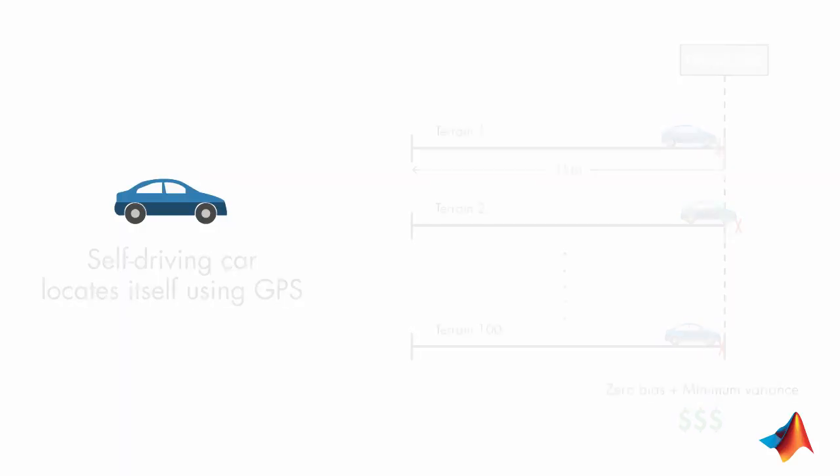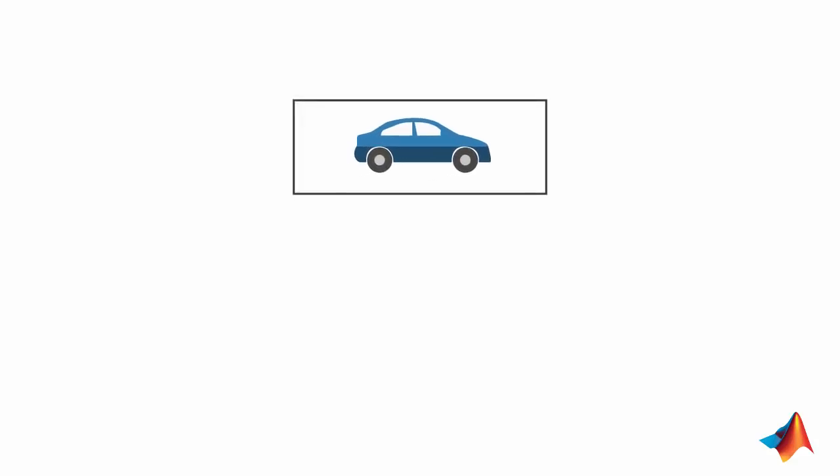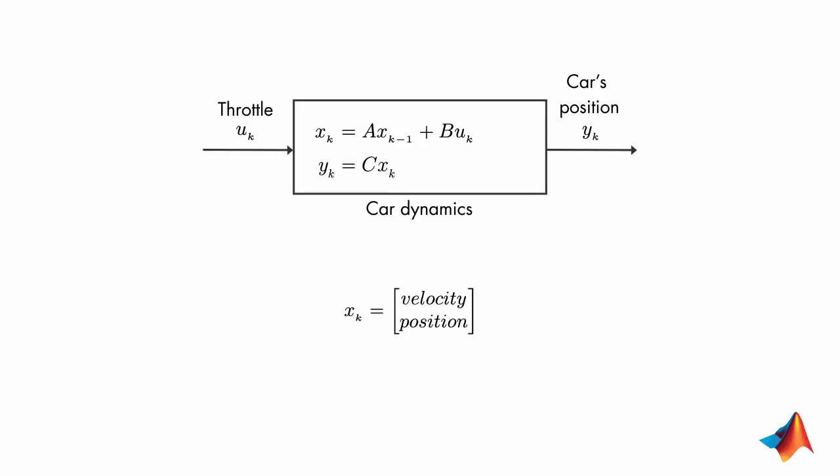Let's look at the system to understand how the Kalman filter works. The input to the car is the throttle. The output that we're interested in is the car's position. For such a system, we would have multiple states.